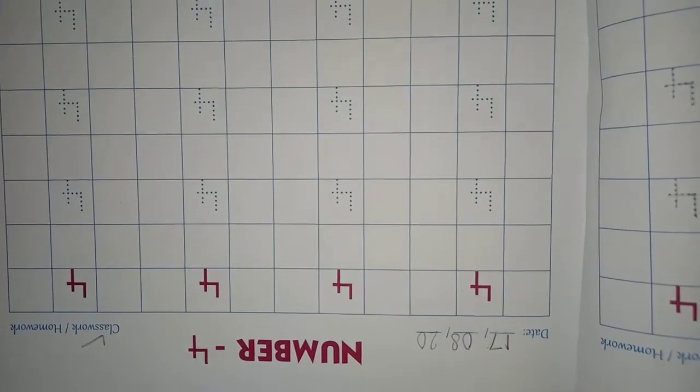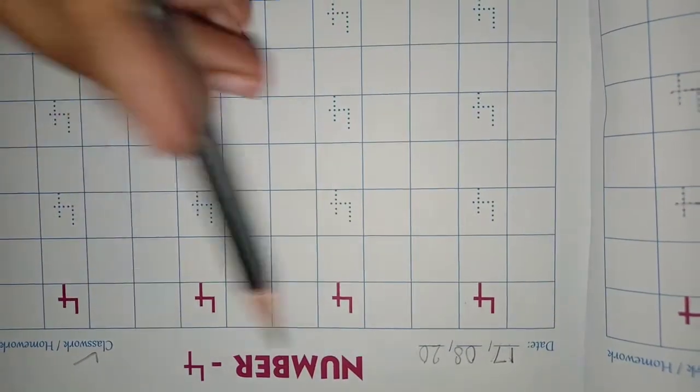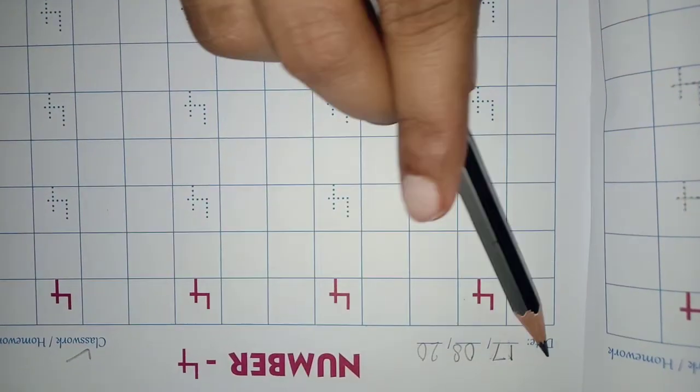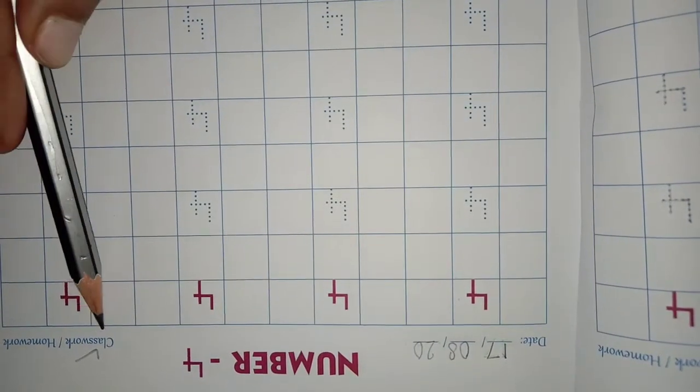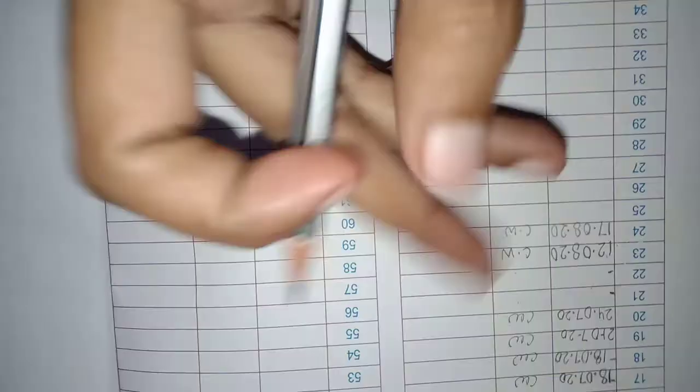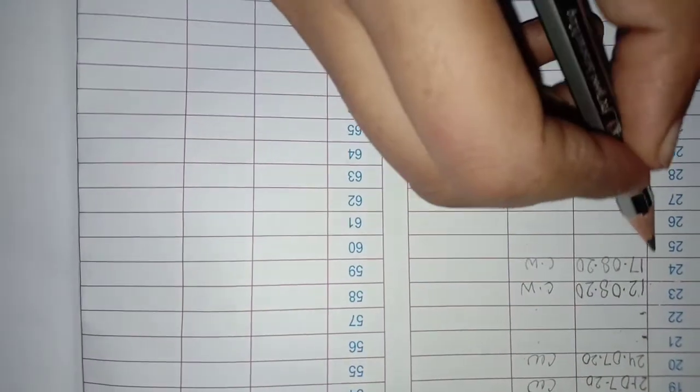So, let's start today's work. And before starting, what you have to do? You have to mention the date, 17.08.2020, and tick on classwork. In the index, you have to mention 17.08.2020 classwork on page number 24.